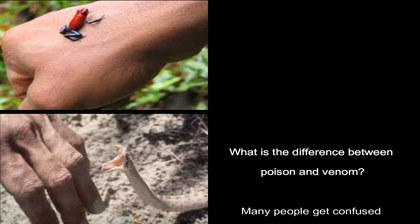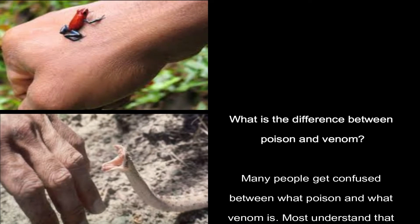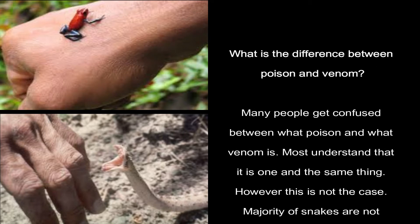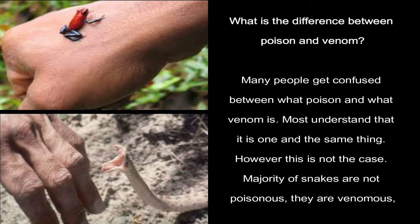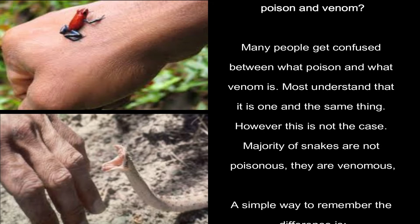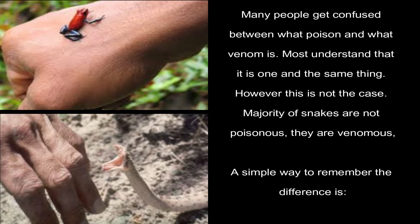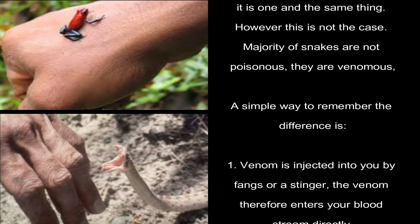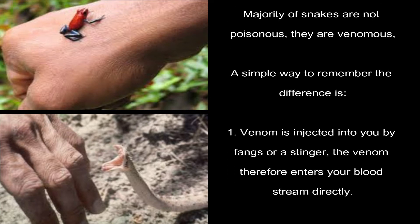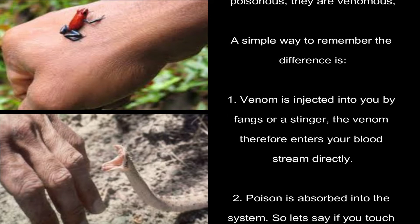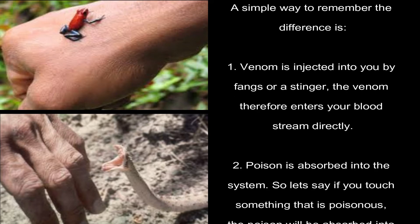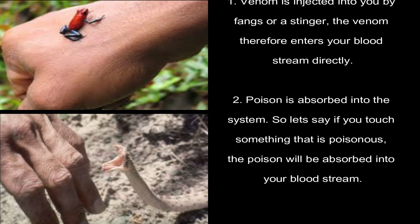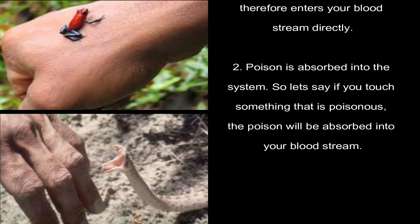What is the difference between poison and venom? Many people get confused between what poison and venom is, and most understand that it is one and the same thing. However, this is not the case. The majority of snakes are not poisonous — they are venomous. A simple way to remember the difference is: venom is injected into you by fangs or a stinger, and therefore enters your bloodstream directly. Poison is absorbed into the system — so if you touch something poisonous, the poison will be absorbed into your bloodstream.